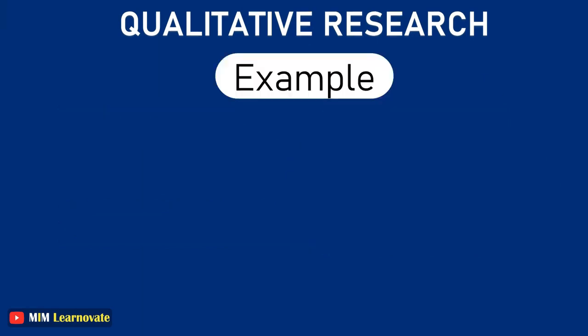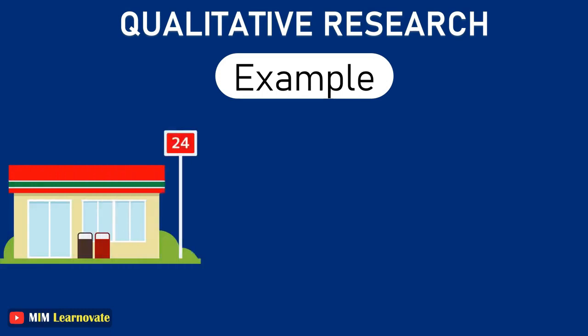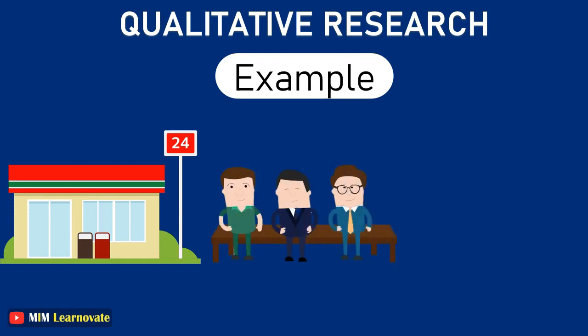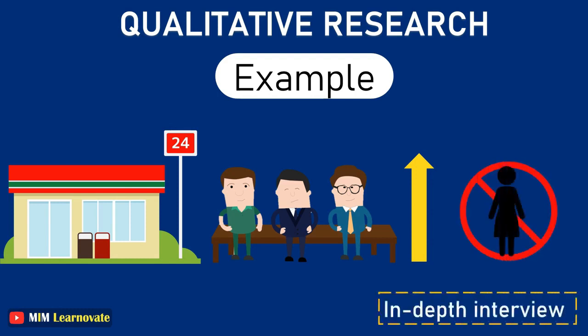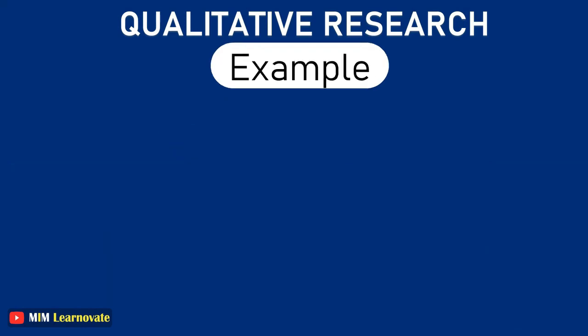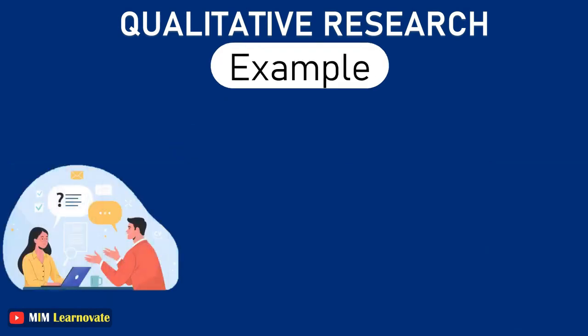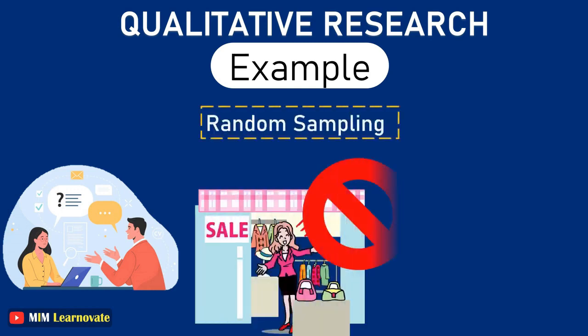Example of qualitative research: Consider a convenience store looking to improve its patronage. A systematic observation concludes that more men are visiting this store. One good method to determine why women were not visiting the store is to conduct in-depth interviews of potential customers. On successfully interviewing female customers visiting nearby stores and malls through random sampling, it was found that the store doesn't have enough items for women, which was understood only by personally interacting with them.